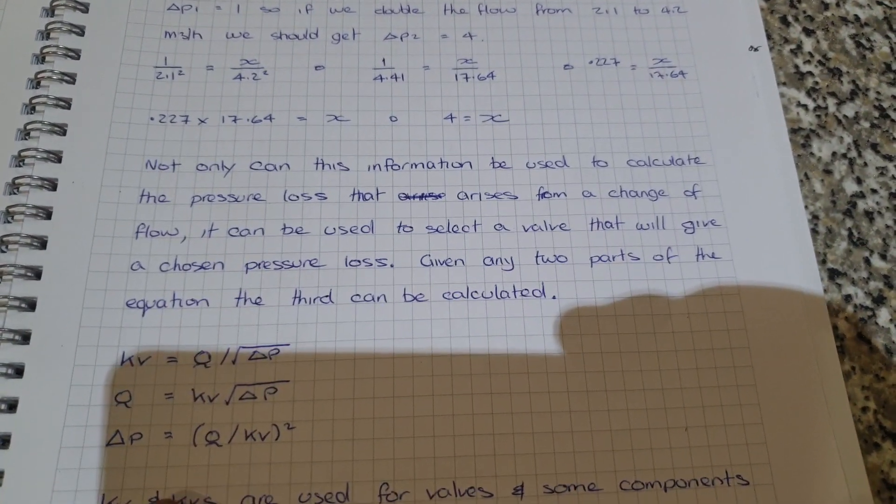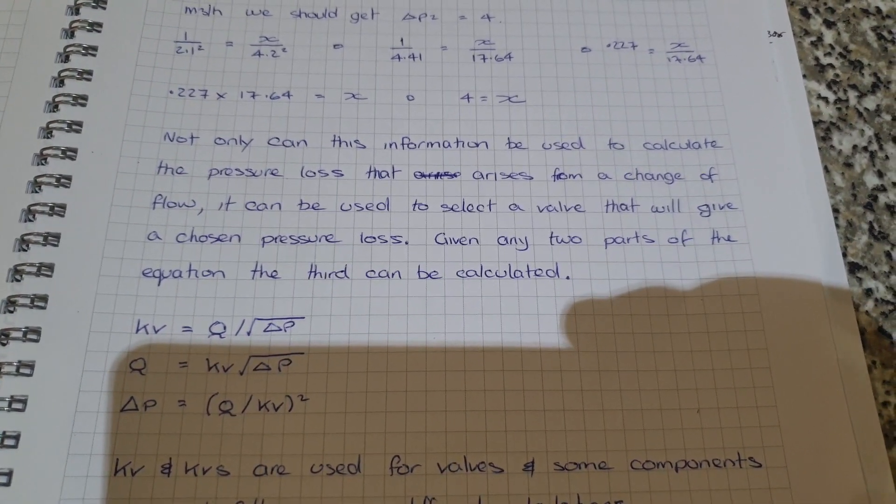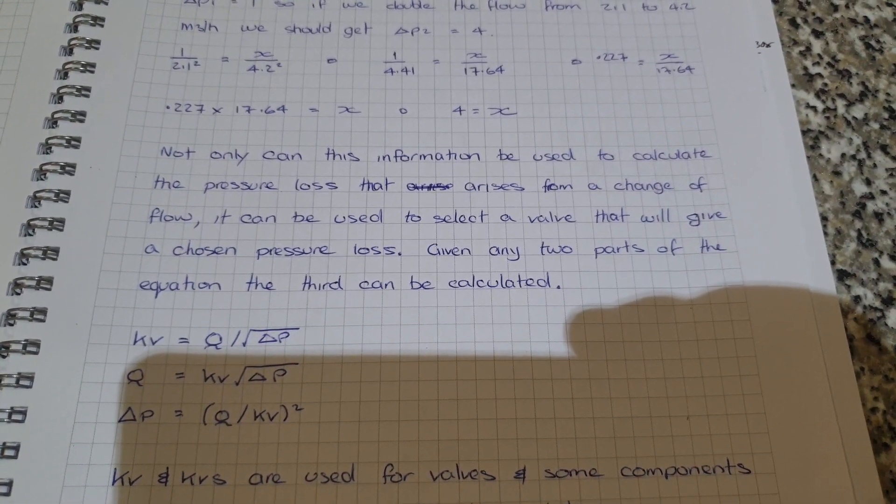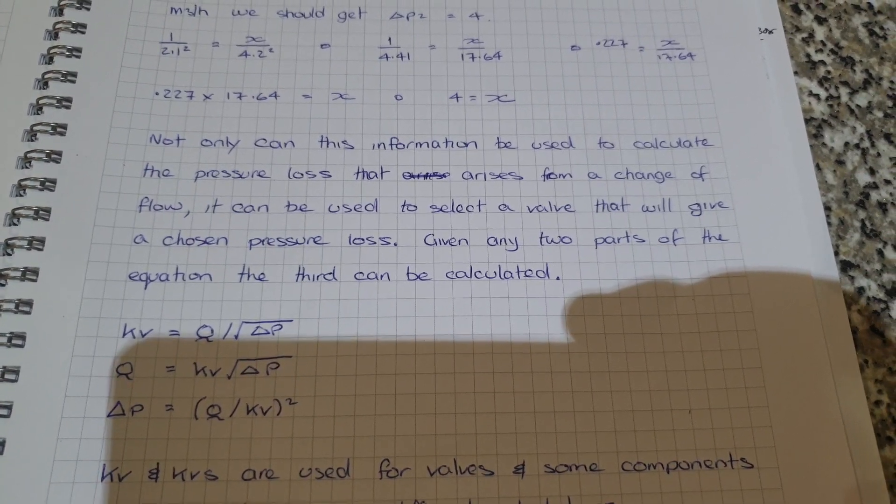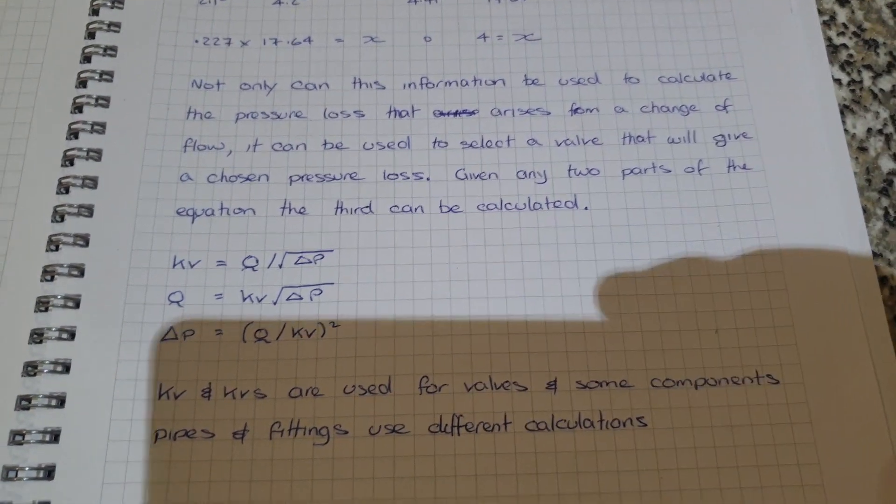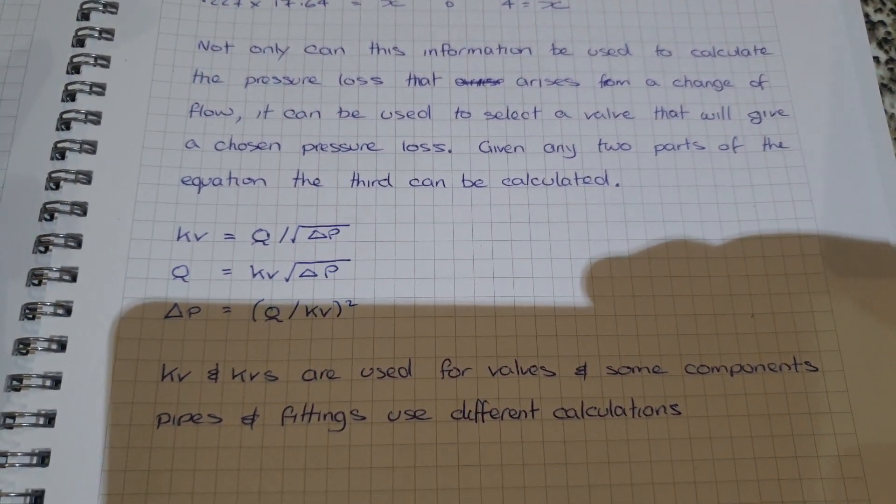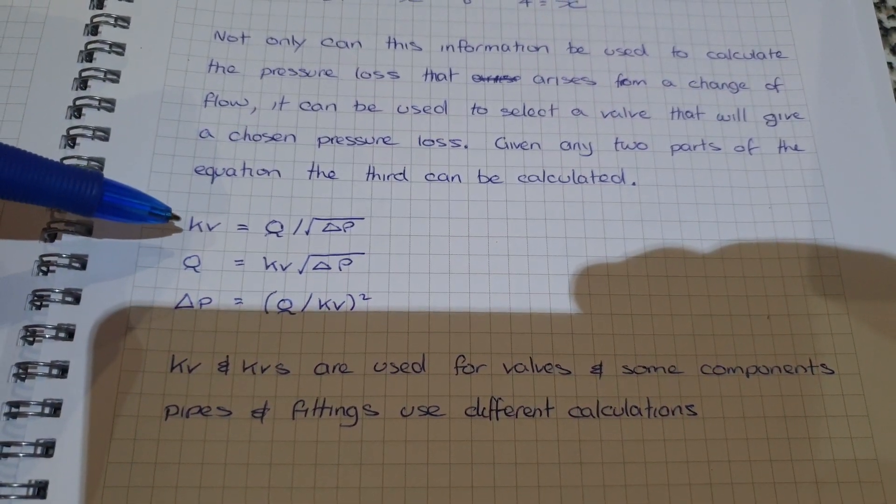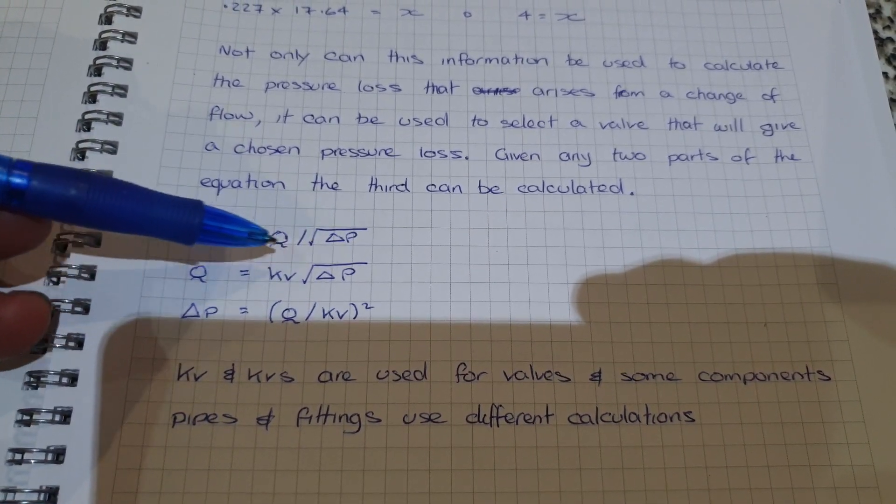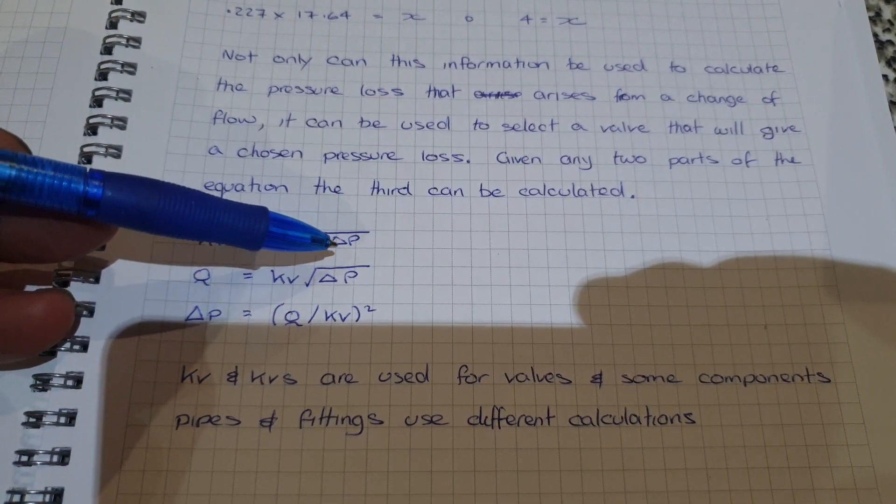Now, not only can we use this information to calculate the pressure loss that arises from a change of flow, it can be used to select a valve that will give a chosen pressure loss. Given any two parts of the equation, the third can be calculated, and through transposition we end up with three useful formulas. If we want to know the KV value of a valve that we want to buy, if we know our flow rate and the delta P that we want, Q divided by the square root of the pressure drop we're after will give us the KV value.